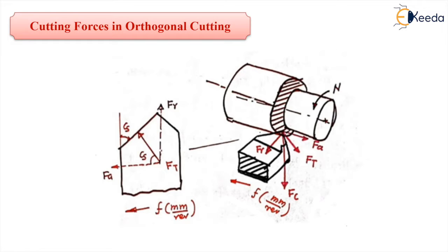The same thing is shown here in a much simplified manner. This is our single point cutting tool. This is the side cutting edge or major cutting edge, this is the end cutting edge or minor cutting edge, and this angle is the side cutting edge angle Cs. The force Ft is acting perpendicular on this side cutting edge with angle Cs, and that is why it is resolved into two components: one is Fa, the axial or longitudinal force, and Fr is the radial force.